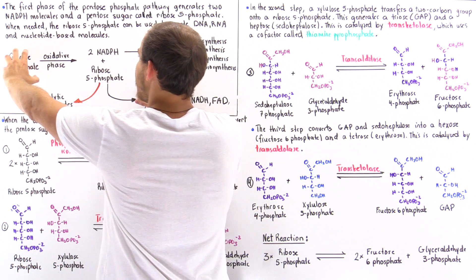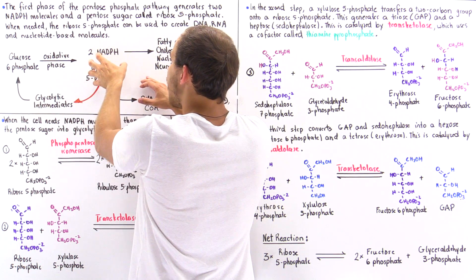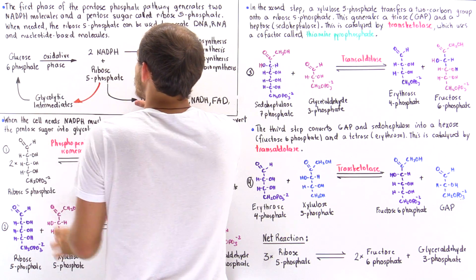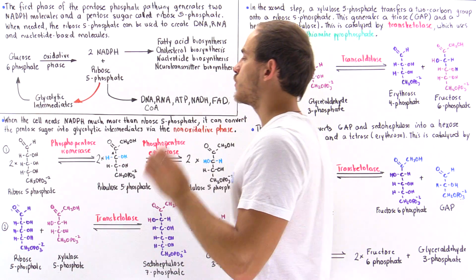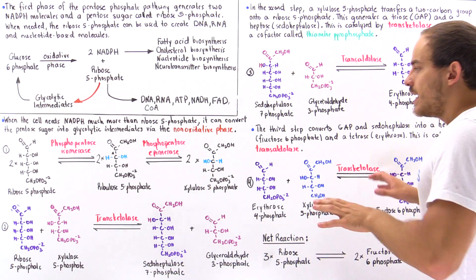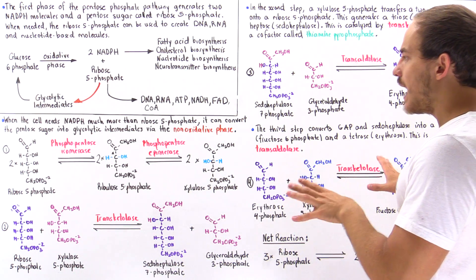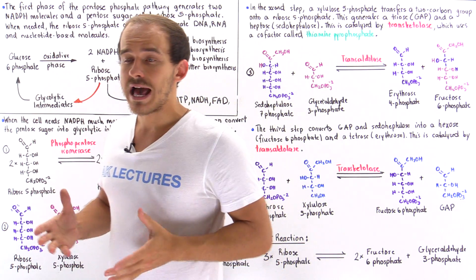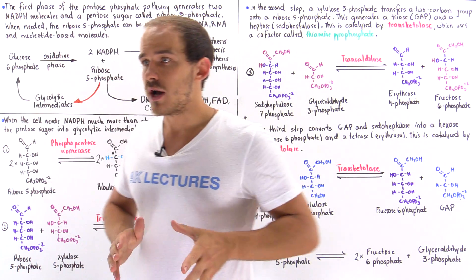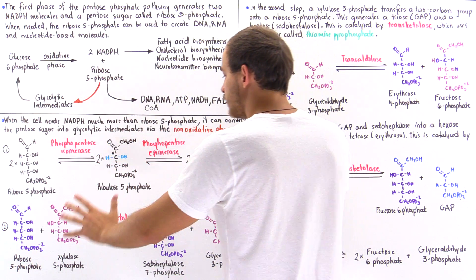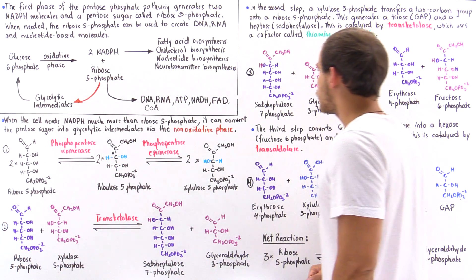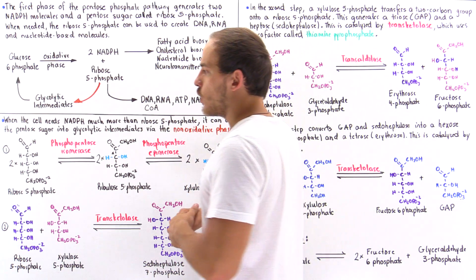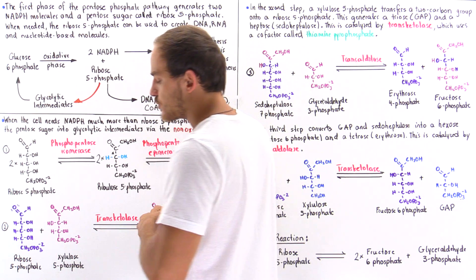This transformation of ribose 5-phosphate into glycolytic intermediates is the non-oxidative phase of the pentose phosphate pathway. The non-oxidative phase can be broken down into four processes: process 1, process 2, process 3, and process 4.